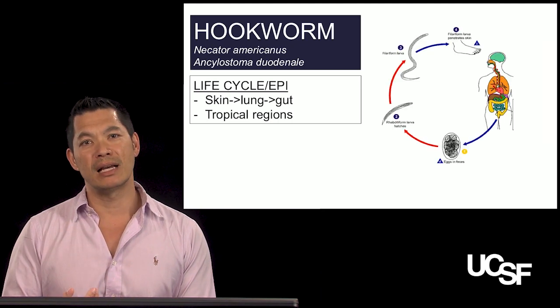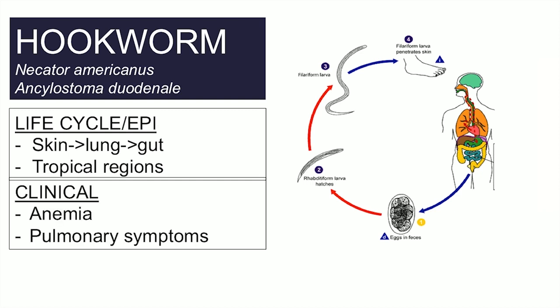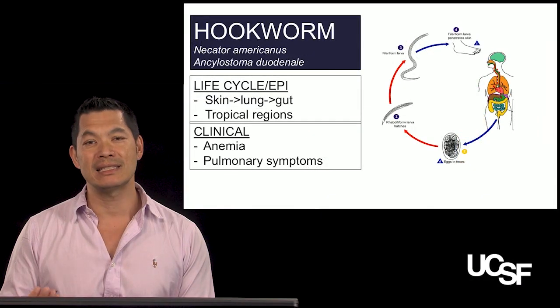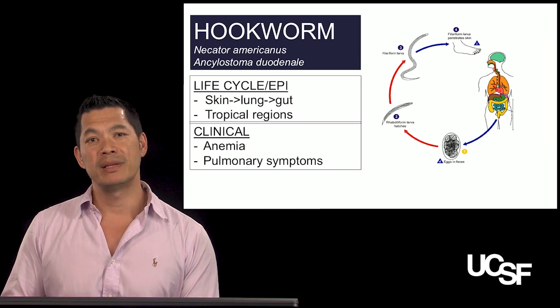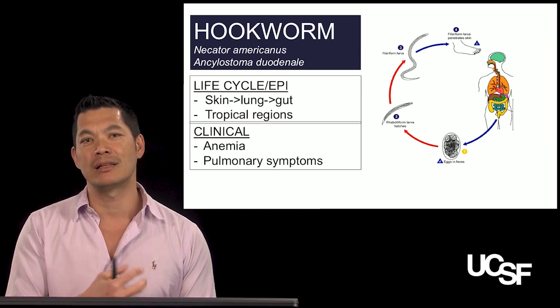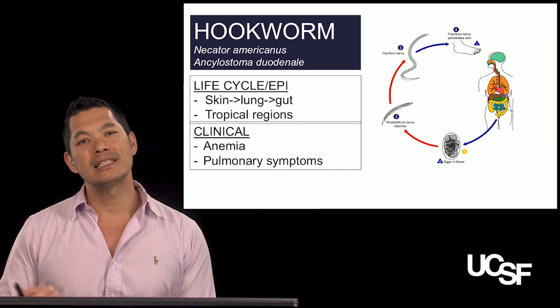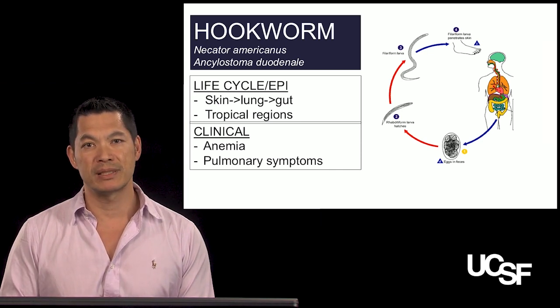The problem is when the larvae are in the GI system and mature into adults, the adults hook onto the small intestines and suck out blood. It's the most common cause of iron deficiency anemia in the world because of the teeth or plates that the hookworm has. As the hookworm migrates through the lungs, like ascaris, it can also cause pulmonary symptoms.